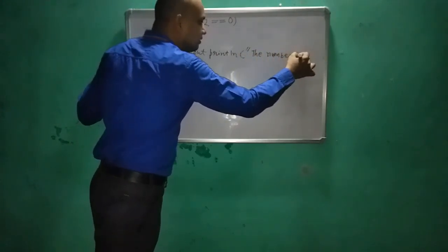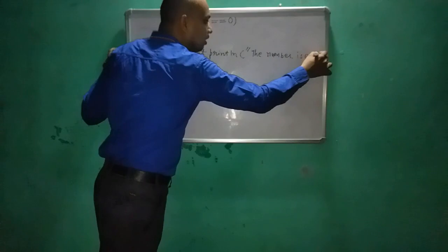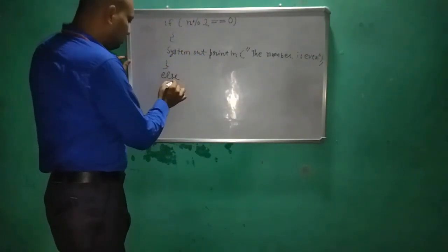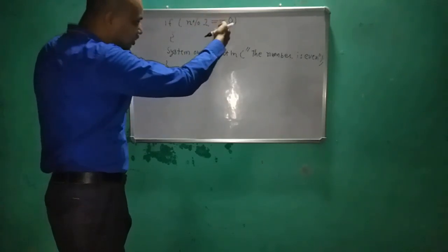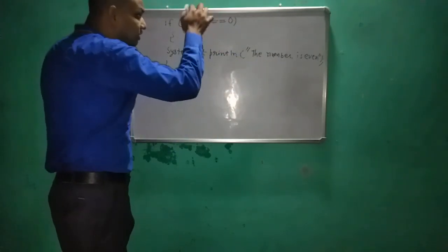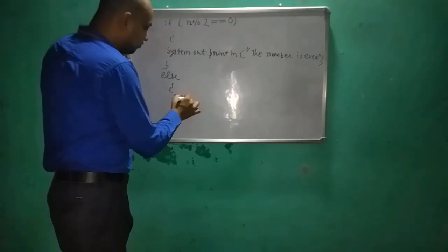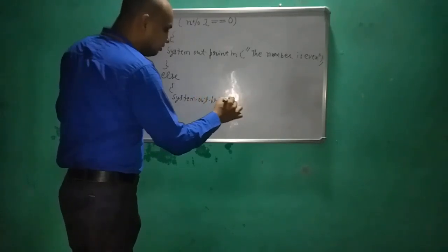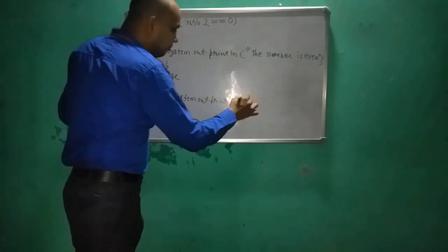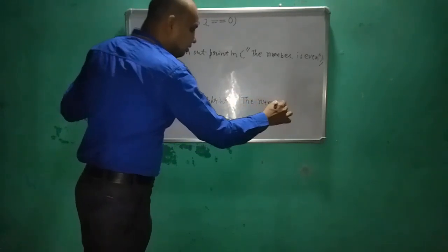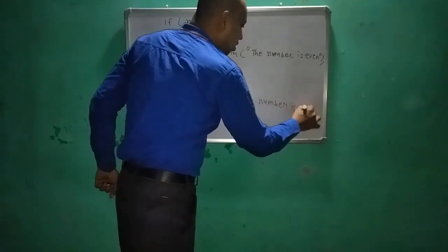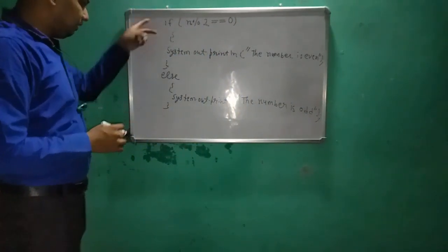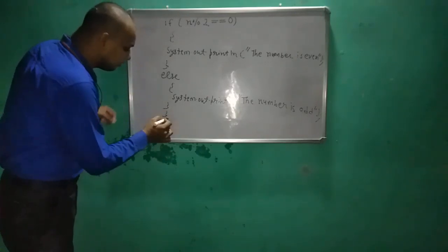Inside the if-block, we print: 'System.out.println("The number is even")'. After that, we write the else part. No additional condition is needed in the else block — if the condition is false, the number is odd. So in the else block we write: 'System.out.println("The number is odd")'. With this, our program is complete. We close the main function and then close the class.